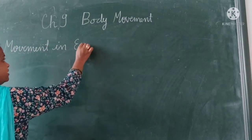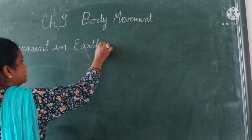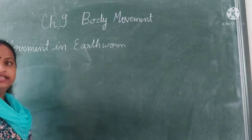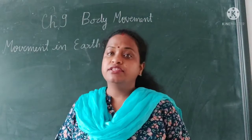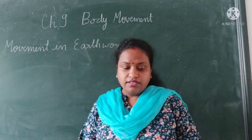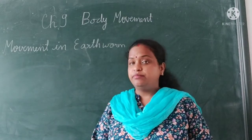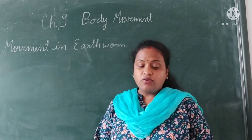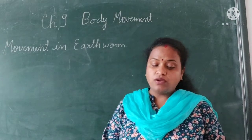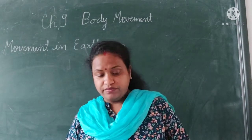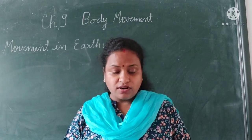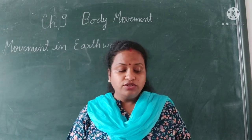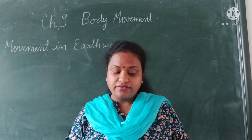How do earthworms move? The earthworm does not contain any bones — it does not have bones. It is only made of muscles that contract and expand along the length of its body. It has tiny bristles called setae on its body which help the earthworm to attach itself to a surface.